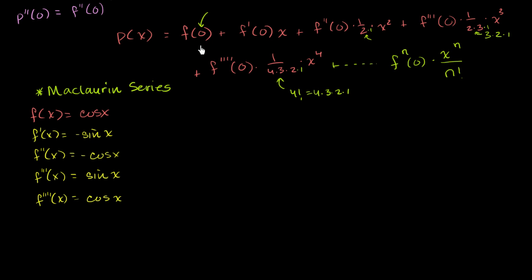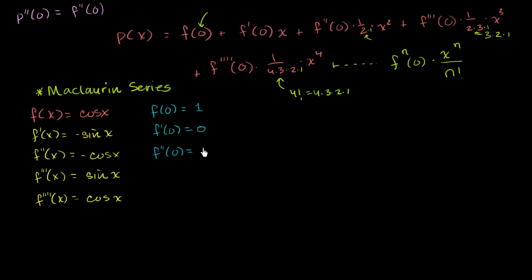Now, looking at what we discussed in the last video, we want the function and its various derivatives evaluated at 0. So f of 0: cosine of 0 is 1. Whether you're talking about 0 radians or 0 degrees, it doesn't matter. f prime of 0: sine of 0 is 0. The second derivative evaluated at 0: cosine of 0 is 1 but we have the negative, so it becomes negative 1. The third derivative evaluated at 0: sine of 0 is 0. And the fourth derivative evaluated at 0: cosine of 0 is 1.